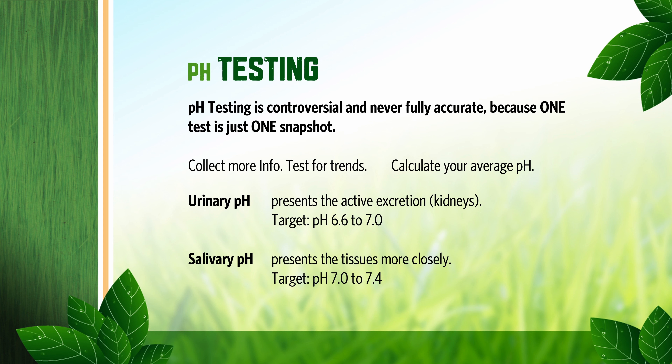You can test in either urine or saliva, as long as you know that urine is usually slightly more acidic, because that is where organic acids are supposed to end up on their way out of the body — the kidneys are supposed to excrete acids into the urine. So the pH target range in urine is 6.6 to 7, just slightly acidic, and in saliva it is 7 to 7.4, just slightly alkaline. I recommend testing in saliva because it reflects the tissue situation more closely than urine.